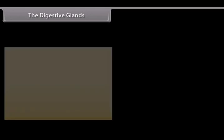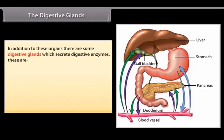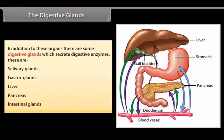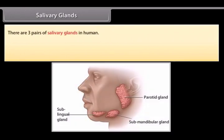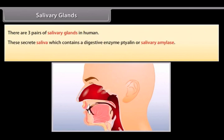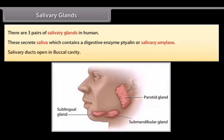In addition to these organs, there are some digestive glands which secrete digestive enzymes: salivary glands, gastric glands, liver, pancreas, and intestinal glands. There are three pairs of salivary glands in humans. These secrete saliva which contains the digestive enzyme ptyalin, or salivary amylase. Salivary ducts open in the buccal cavity.